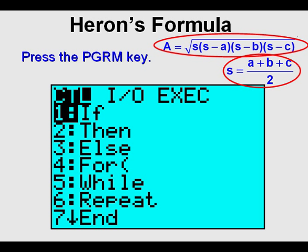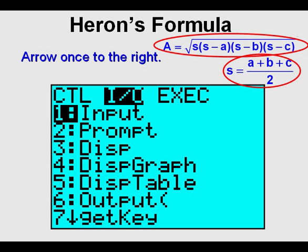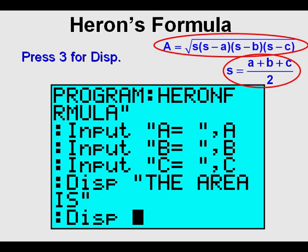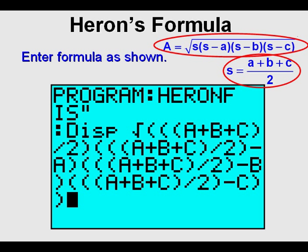Press the program key, arrow once to the right, press 3 for Display. Enter the formula as shown. The square root sign is made by pressing 2nd, then the x-squared key right above the log key. If all the parentheses are not in place correctly, you will get an error message. If you enter the program and it doesn't work, come back here to make sure you have it right. One common mistake is to enter the negative sign at the bottom of the keypad instead of the minus sign on the right side of the keypad.